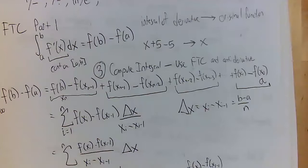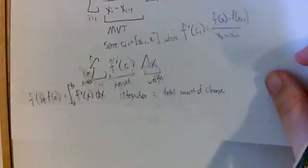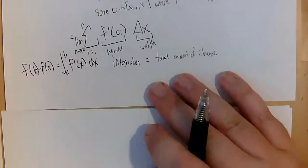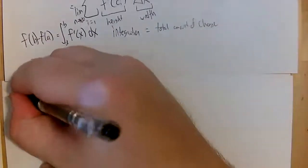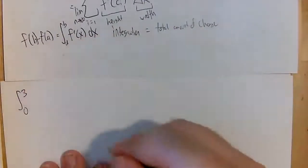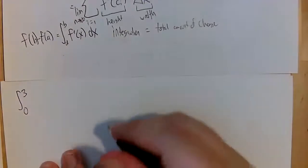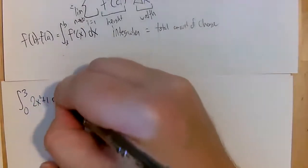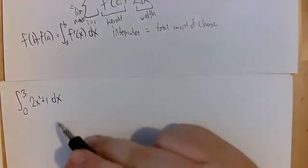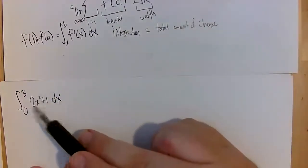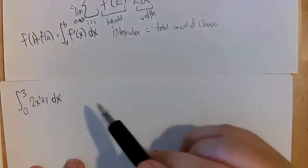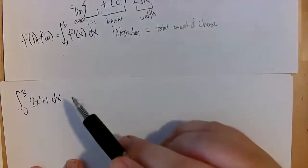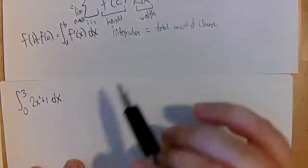You might be wondering what this actually does for us practically. Remember in a previous video, we spent quite a bit of time finding the limit of the Riemann sum to find the area under a curve. We did the definite integral from zero to three of 2x² plus 1, and earlier that took about 20 minutes going through the limit of the Riemann sum. But now we can do it much faster.